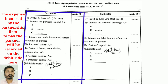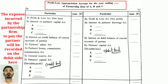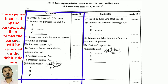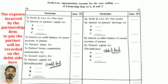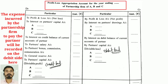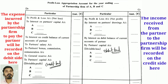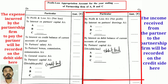To Partners' Capital Account — divisible profit — distributed among partners A, B, and C in their profit and loss sharing ratio. On the right side (credit side): By Profit and Loss Account (net profit); By Interest on Partners' Drawing Account — partners A, B, and C.